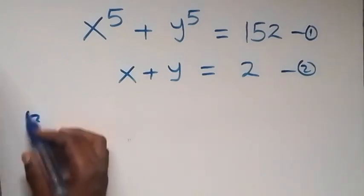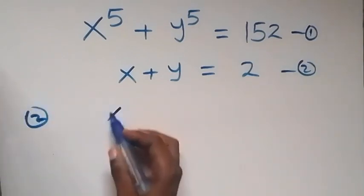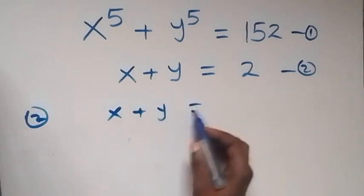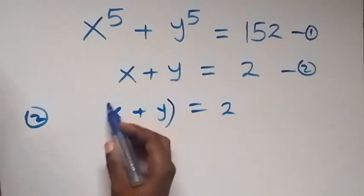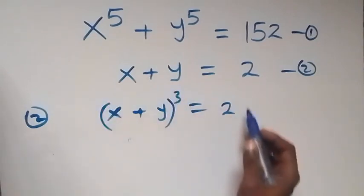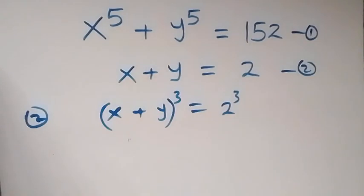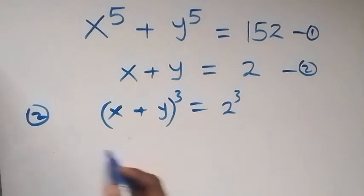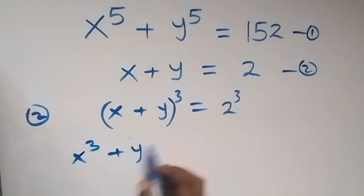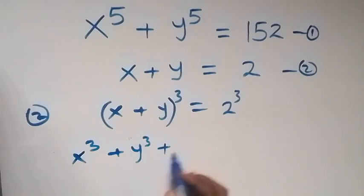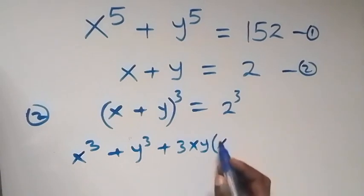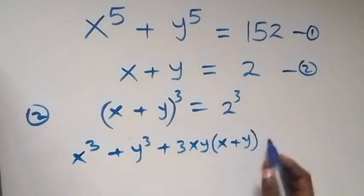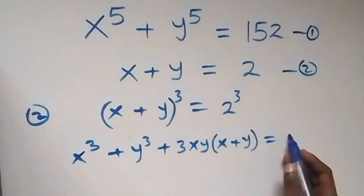From equation 2, we have x plus y equals to 2. Let's raise both sides to power 3. This side raised to power 3, then this side raised to power 3. And from here, the expansion becomes x raised to power 3 plus y raised to power 3 plus 3xy into bracket x plus y, equals to 2 raised to power 3, which gives us 8.